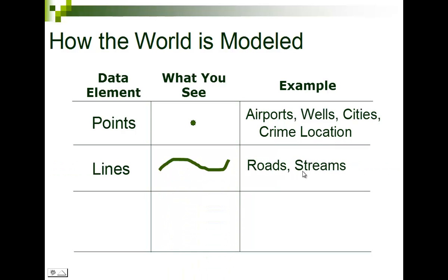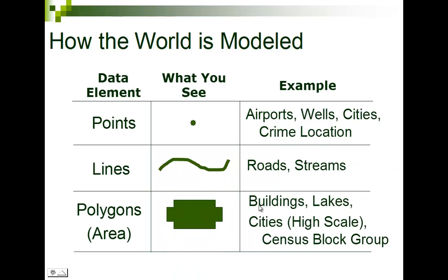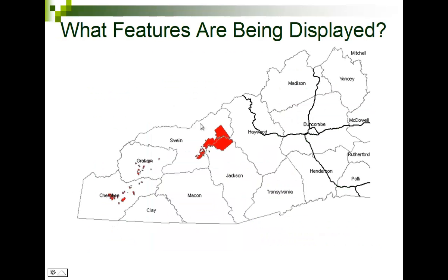Lines represent roads or streams — these are linear features. Polygons represent things like buildings, lakes, cities, census block groups, or counties. Polygons are going to have area — the space inside — and perimeter, the distance around it. Points have neither; they're just represented as a latitude and a longitude.